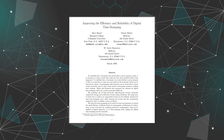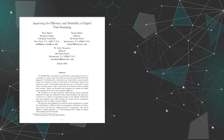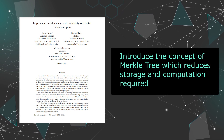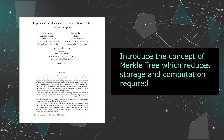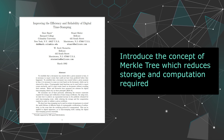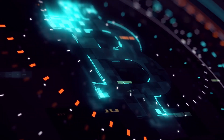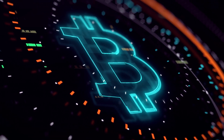In 1992, they upgraded their system to incorporate Merkle trees that enhanced efficiency, thereby enabling the collection of more documents on a single block. Their works later on became a key part of the Bitcoin white paper, as well as the software that powers the Bitcoin blockchain.